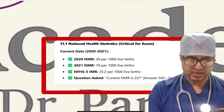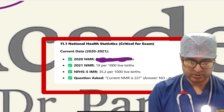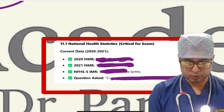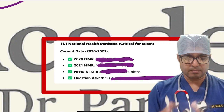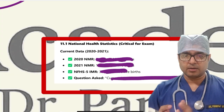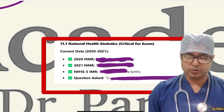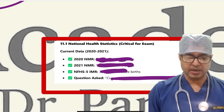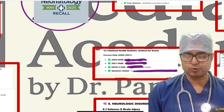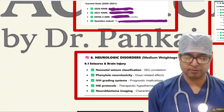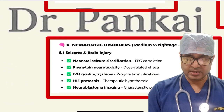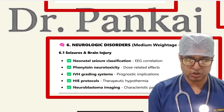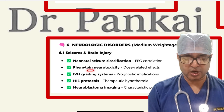National health statistics data — while not current at the time, you must remember these figures as per the current scenario, because NMR, under-5 MR, and IMR will be asked again and again. Be thorough with this data just before the exam. CNS had around five questions on neonatal seizure classification, phenobarbital neurotoxicity, Sarnat grading system, HIE protocol, and neuroblastoma imaging.